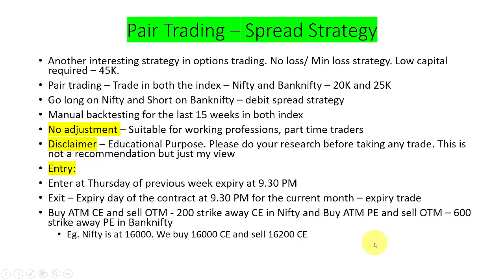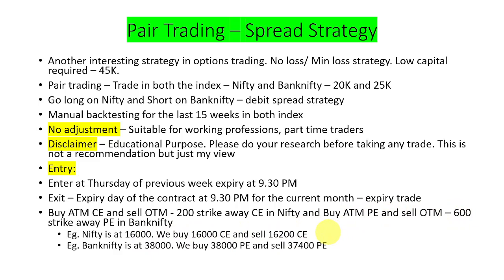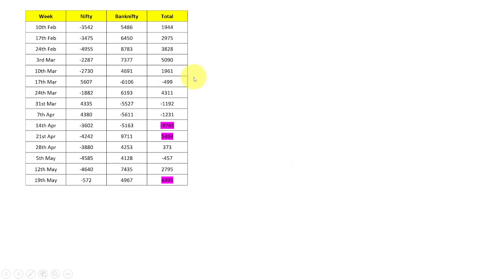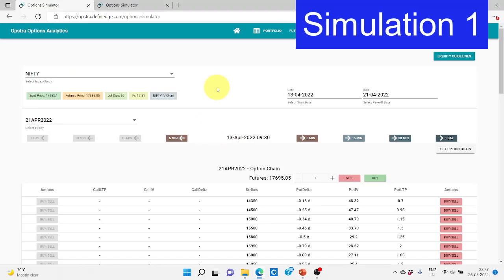Similarly, in Bank Nifty we buy ATM put and sell OTM put 600 strike price away from the current market price. For example, if Nifty is at 16,000, we buy the 16,000 call option and sell the 16,200 call option. Similarly in Bank Nifty, if it is trading at 38,000, we buy the 38,000 put option and sell the 37,000 put option.